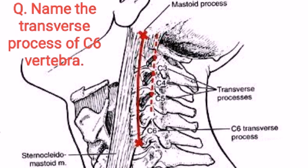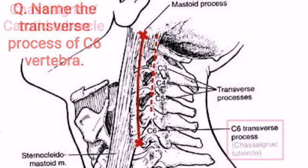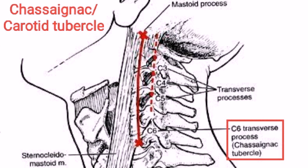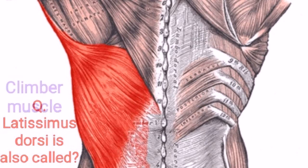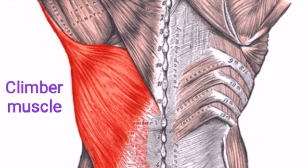Name the transverse process of C6 vertebra. Chassaignac's tubercle, or carotid tubercle. Latissimus dorsi is also called the climber muscle.